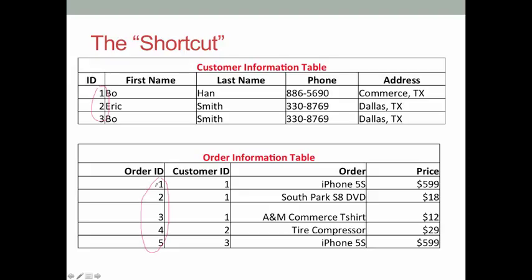Because there are no repeated values in the order ID column. But there are repeated values — for instance, we have three 1s in the customer ID column. Therefore, customer ID is not a primary key. I also posted some primary key exercises on eCollege. Please practice according to the definition of primary key, foreign key, or use the shortcut to find the answers. This concludes this lecture. I will see you soon in the next one.